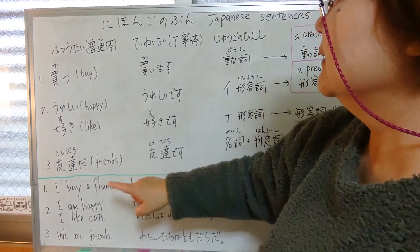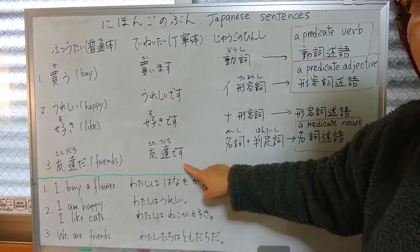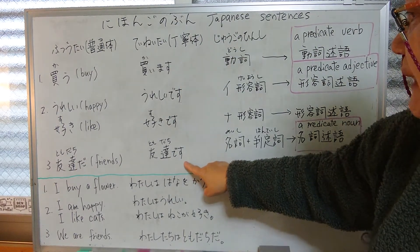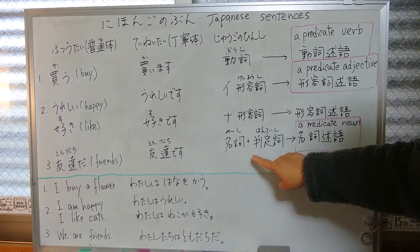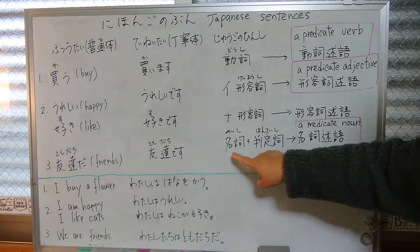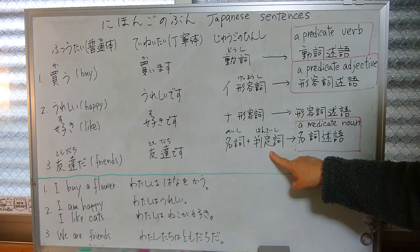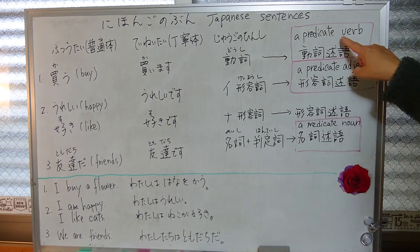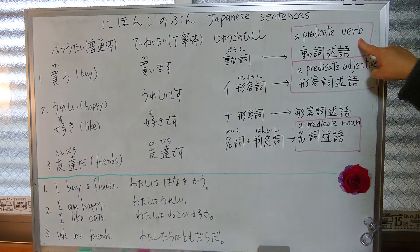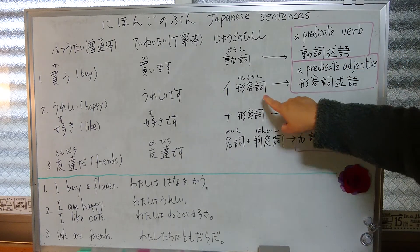The polite form is tomodachi desu. This is meishi plus hanteishi — noun plus judgment word. The predicate verb — doushi — we call it doushi jutsugo.